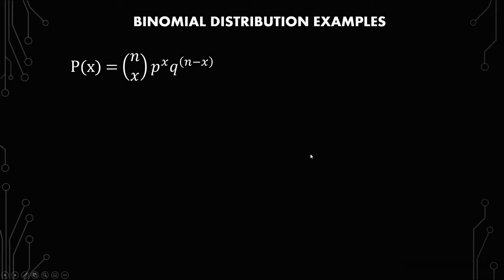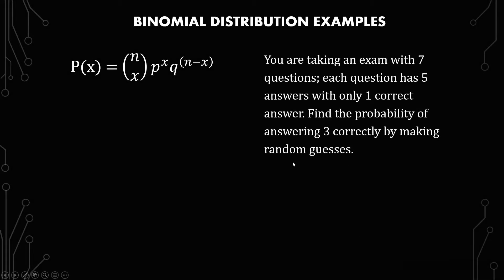This first example is about a situation that I know a lot of people have been in. Maybe you have an exam or a quiz that you didn't study for, and you're just guessing. And you want to know the probability that you'll actually get a certain score. You are taking an exam with seven questions. Each question has five answers with only one correct answer. Find the probability of answering three correctly by making random guesses.